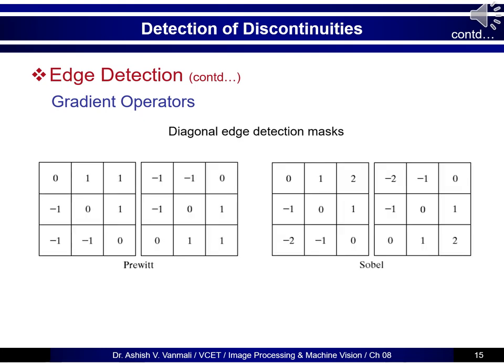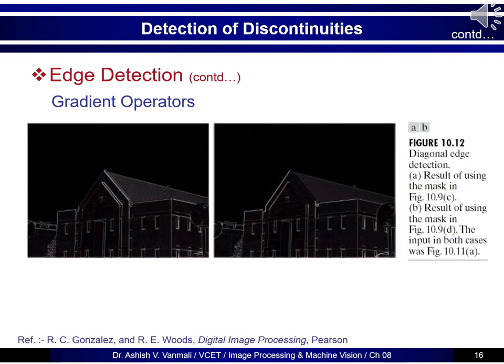We can also have masks that detect diagonal edges for Prewitt or Sobel, and these diagonal masks are shown here. In this example using the diagonal Sobel mask, the x-gradient and y-gradient now capture the diagonal edges instead of horizontal and vertical ones — specifically, the x-gradient predominantly captures edges at minus 45 degrees.